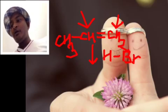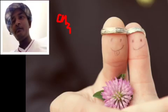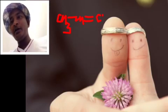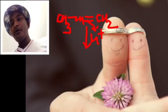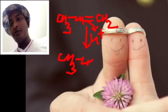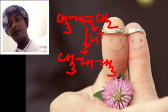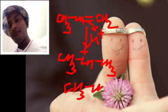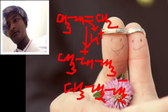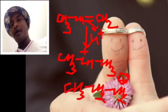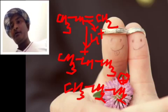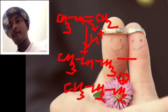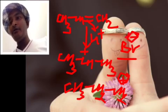This rule is based on the stability of carbocations. When the unsymmetrical alkene reacts with H⁺, it forms a carbocation. There are two possibilities: the first carbocation is more stable due to six hyperconjugations, while the second carbocation is less stable due to only two hyperconjugations. Therefore, the first carbocation is formed, and Br⁻ attacks it to form the overall product.